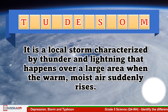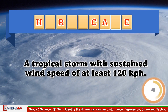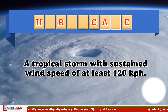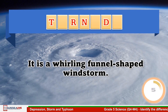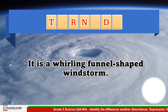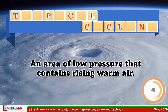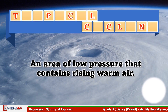The answer is thunderstorm. A tropical storm with sustained wind speed of at least 120 kilometers per hour — the answer is hurricane. It is a whirling funnel-shaped wind storm — the answer is tornado. An area of low pressure that contains rising warm air — the answer is tropical cyclone.